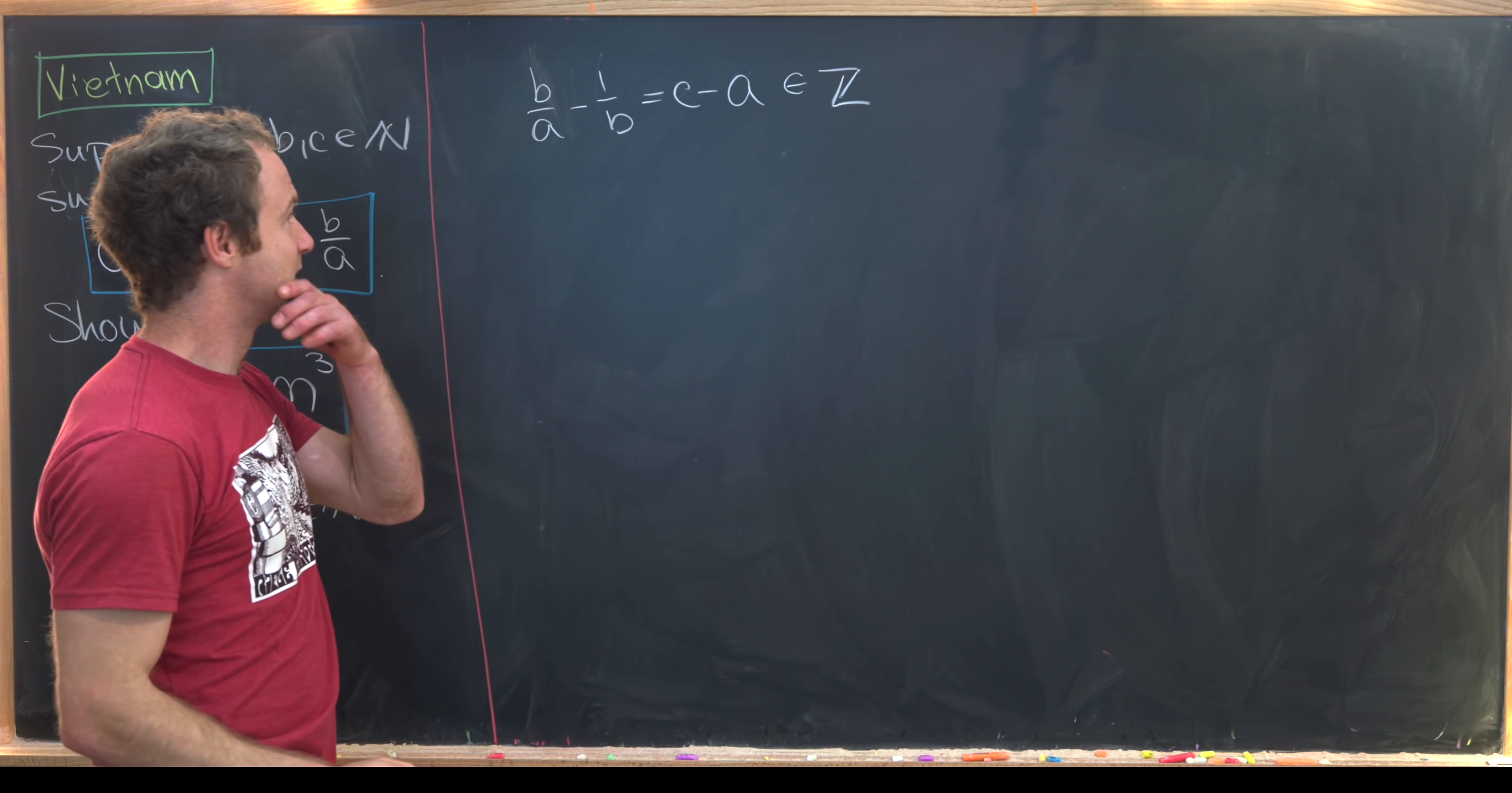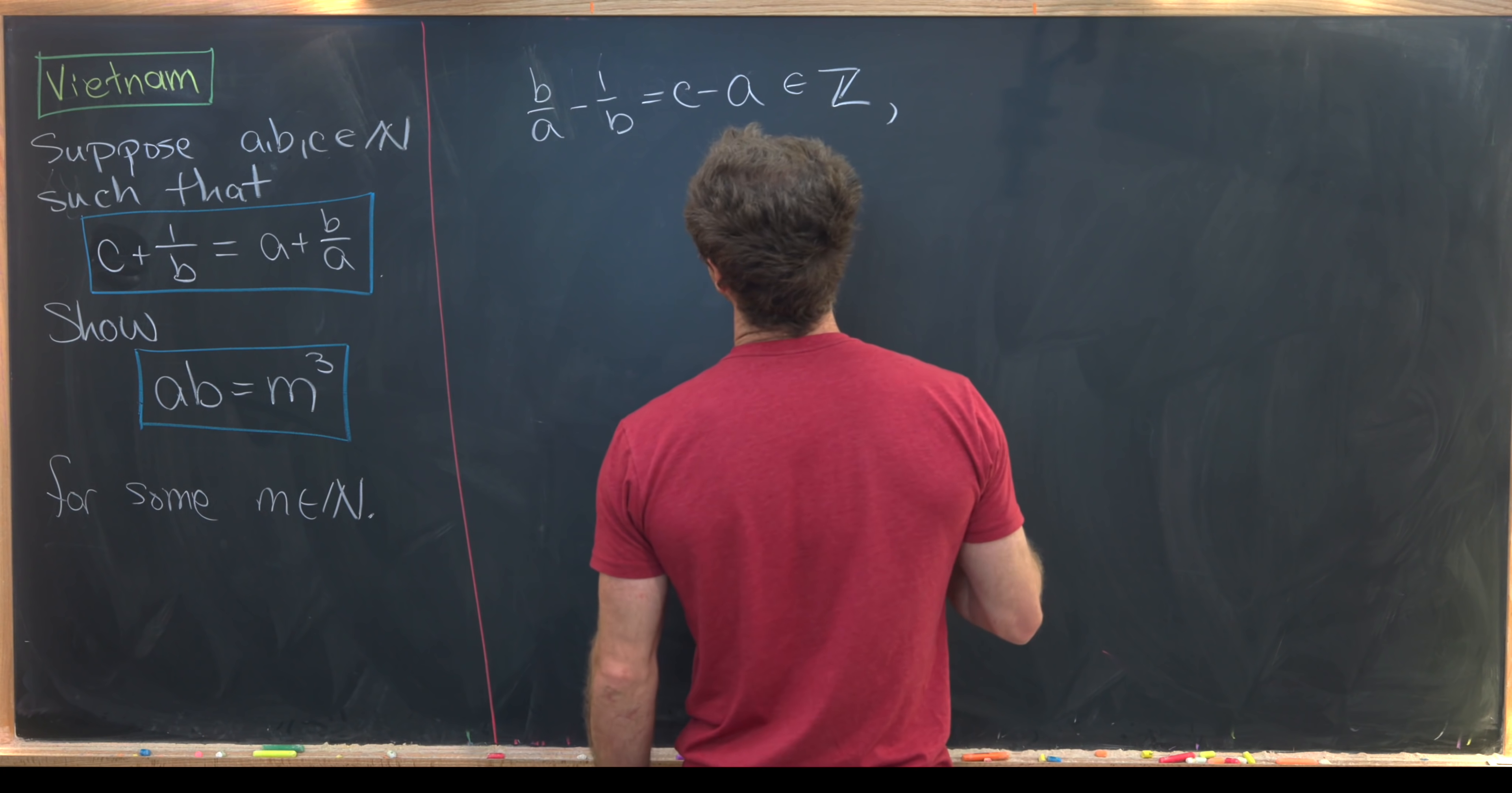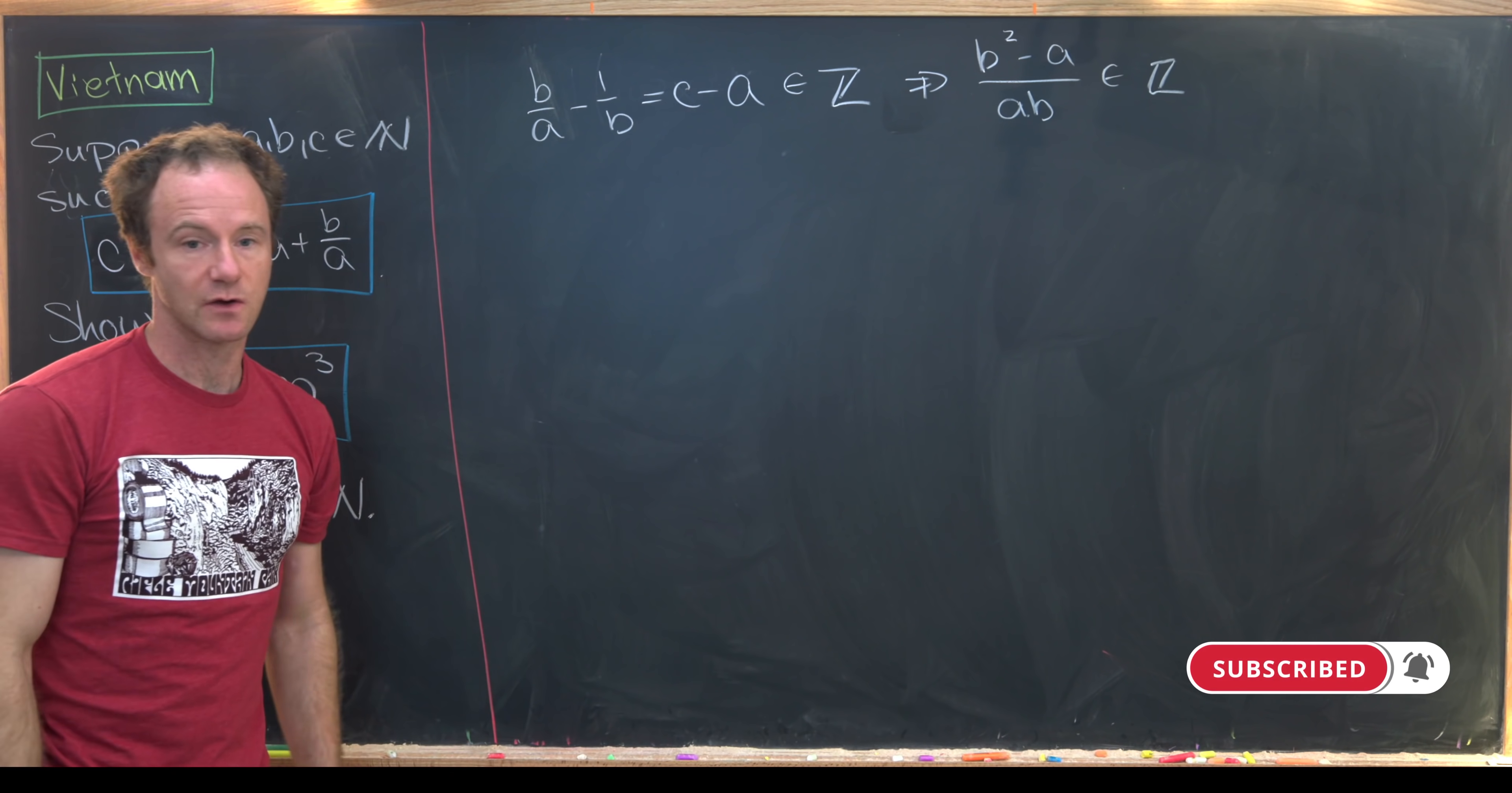Okay, but now we can do some arithmetic on this right-hand side of our equation. Let's give this a common denominator. Notice the common denominator will obviously be A times B. So that's going to give us B squared minus A over A times B is an integer. So that follows from this rewriting of our given equation.